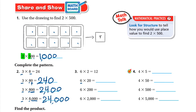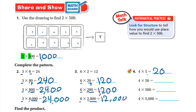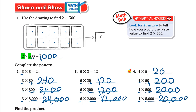Three times 8,000: 24 with three zeros — 24,000. For the 6 times 2 family: 6 times 2 is 12. Six times 20: write one zero — 120. Six times 200: 12 with two zeros — 1,200. Six times 2,000: 12 with three zeros — 12,000. For 4 times 5: 4 times 5 is 20, so write one zero for 4 times 50 — 200. Four times 5,000: 20 with three zeros — 20,000.